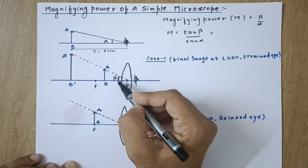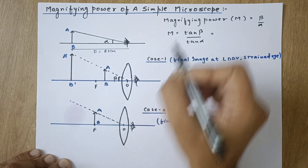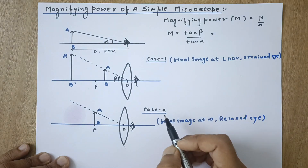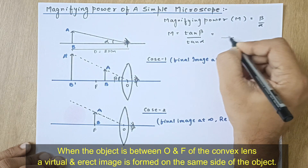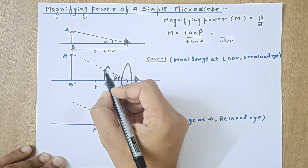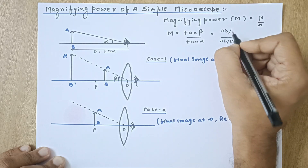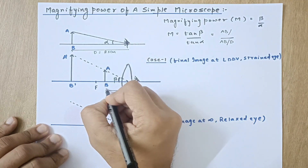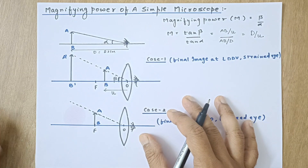Since all angles are very very small, we know the property that tan(alpha) = sin(alpha) = alpha. So magnifying power is beta by alpha, which can also be written as tan(beta) / tan(alpha). Now tan(alpha) = AB / d, where d is the least distance of distinct vision, and tan(beta) = AB / u, where u is the object distance. The AB cancels, giving the general formula: magnifying power M = d / u.